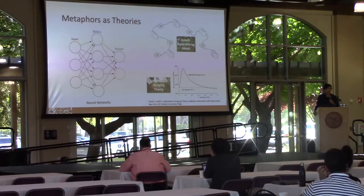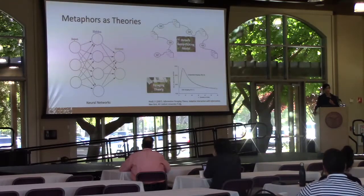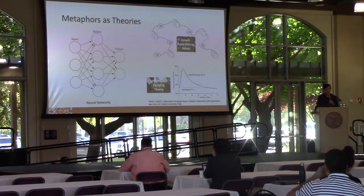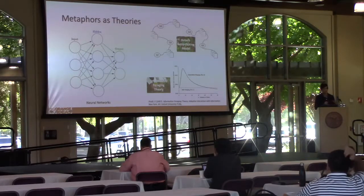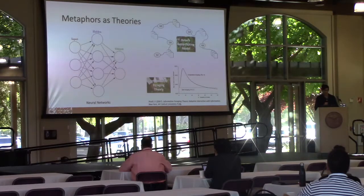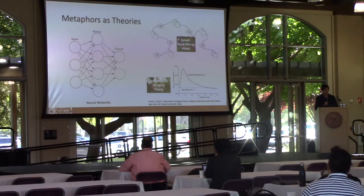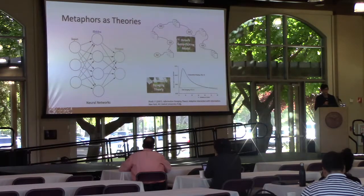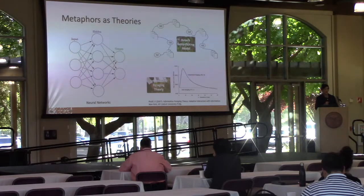We also have theories used as metaphors. Neural networks, of course, is something a lot of people find in here — that's a metaphor that helps us understand and do something. It's a theoretical construct in the sense that there is not an actual physical neural network, but it's a model that helps us understand something. There's also a couple of famous ones from information science. There's Bates' berry-picking model, which describes how people interact with information in a system — very revolutionary at the time it was proposed, because the prior assumption was that people had one query and there was one set of documents, and that was the objective of the system.